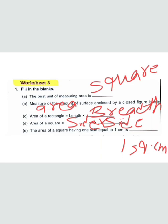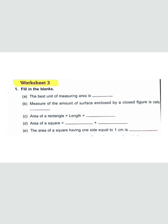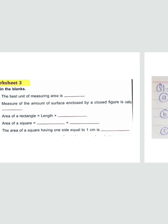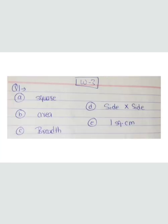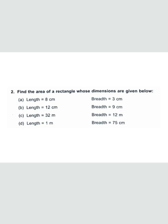Let me tell you the answers once again: the best unit of measuring area is square measure; the amount of the surface enclosed by a closed figure is called area; area of rectangle equals length multiplied by breadth; area of square equals side multiplied by side; and the area of a square having one side equal to one centimeter is one square centimeter. Let's move to question number two.